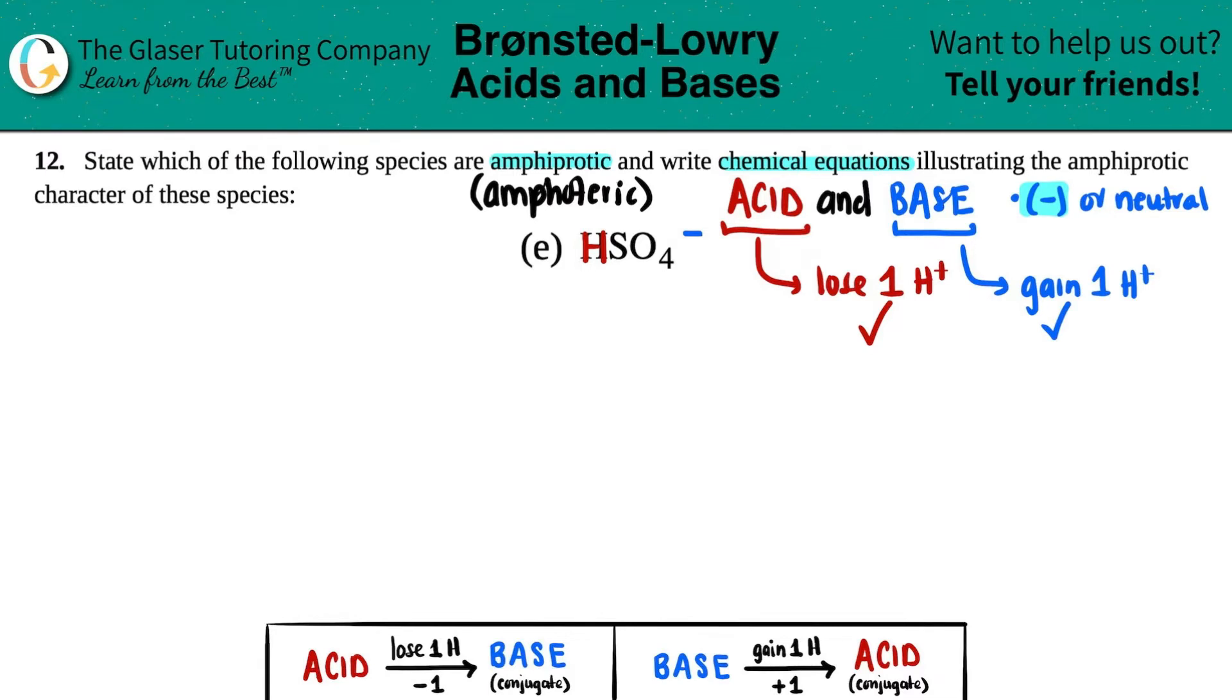Now we have both of them checked, so HSO4- is amphiprotic or amphoteric. Now we just have to write the chemical equations. There's going to be two equations that we have to write: one in which HSO4- is acting as the acid and one in which it's acting as the base.